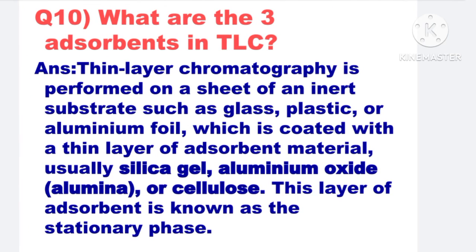Next: What are the three adsorbents in TLC? Thin layer chromatography is performed on a sheet of an inert substance such as glass, plastic, or aluminum foil, which is coated with a thin layer of adsorbent material, usually silica gel, aluminum oxide, or cellulose. This layer of adsorbent is known as the stationary phase.